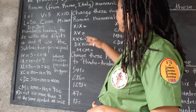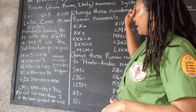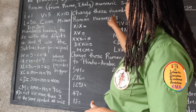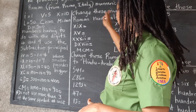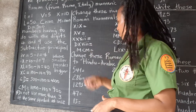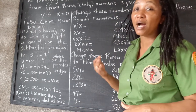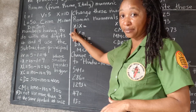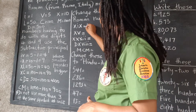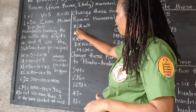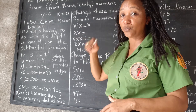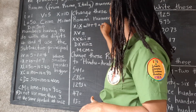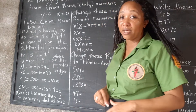We're changing the Roman numerals to Hindu-Arabic. So we have a 10, and we have a 1 coming in front of that 10, which means we subtract. So this part of it is 9. You can write it out as 10 plus 9, and that gives 19.